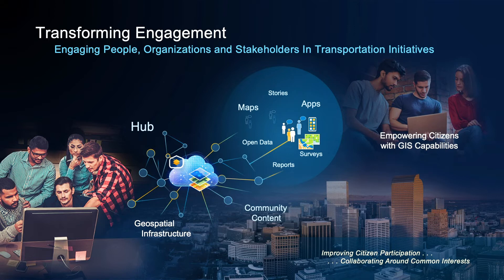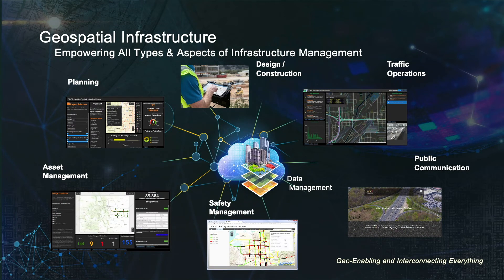The big topic has been this idea of systems of engagement, where we can make information available transparently, showing and engaging people, and getting their feedback back through apps and maps. This empowers and engages citizens so they can not only voice their opinion but act as volunteers to help agencies do a better job around common interests. Geospatial infrastructure is empowering all aspects of DOT management and transportation management — from safety to asset management, to planning, construction, design, engineering, and public communications.